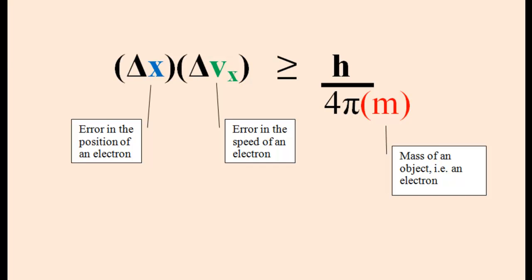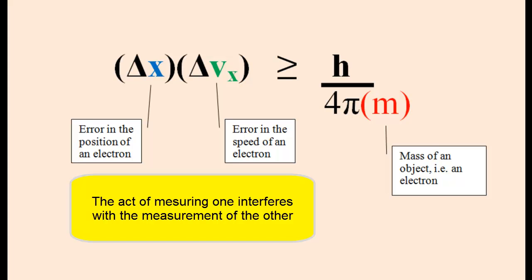that you cannot know the position and the speed of an electron with great accuracy simultaneously. You can only know either the position of the electron with great accuracy or the speed of the electron with great accuracy.